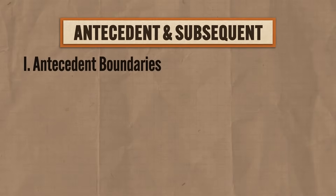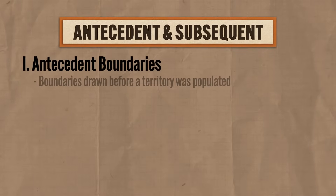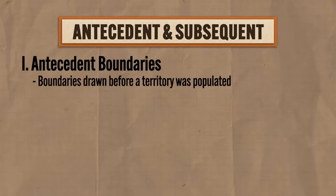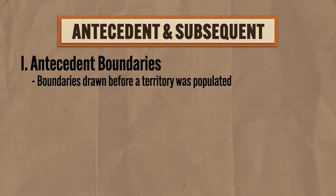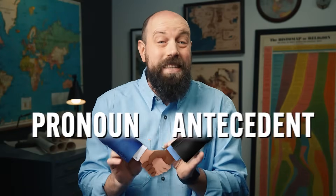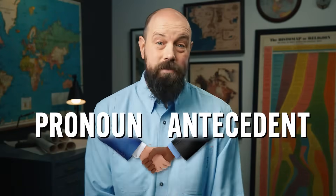The first flavor is antecedent boundaries, which are boundaries drawn before a territory was populated. And if you remember the grammar you learned in language arts, that might help you remember this kind of boundary. Do you remember pronoun antecedent agreement?